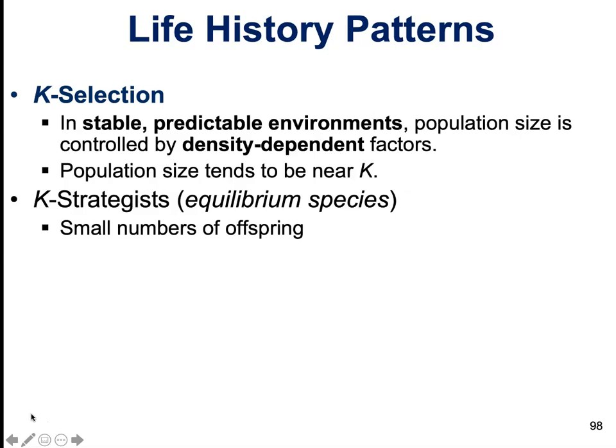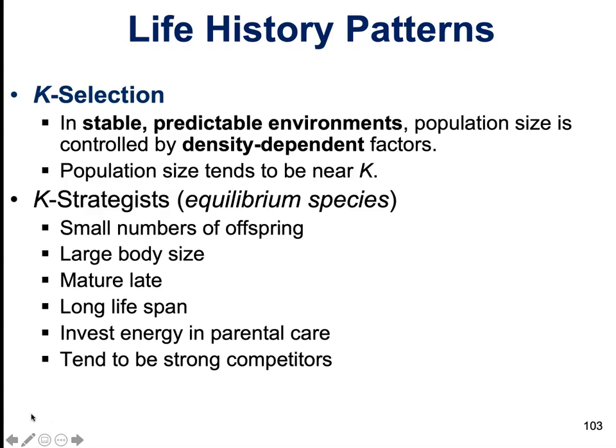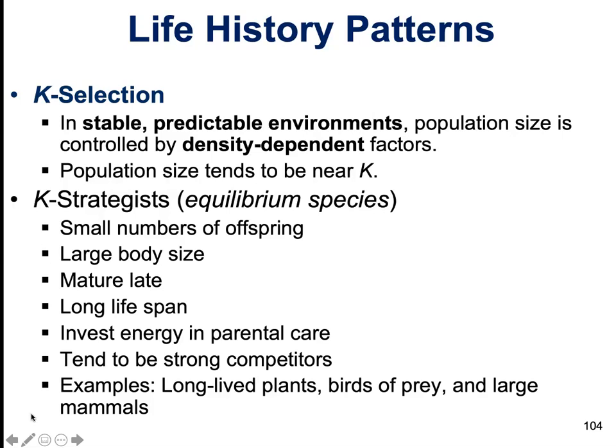K-selected species tend to produce small numbers of offspring, are larger in body size, mature later in life, have a longer lifespan, and invest more energy in parental care. They also tend to be very strong competitors. Since their lifespan is long, it's important that they survive long enough to reproduce. Great examples include long-lived plants, birds of prey, and large mammals — all K-selected strategists.